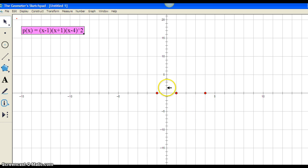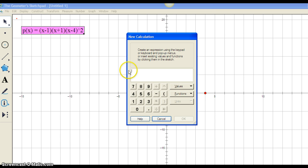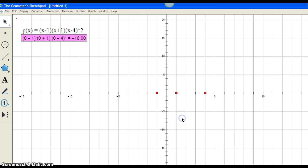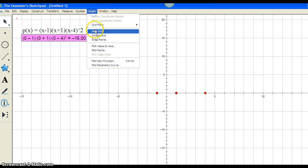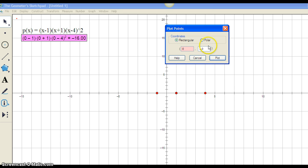First thing I'm going to do is find out where the y-intercept is. So in order to do that, I'm going to substitute the value of x equals 0 into our function. So let's go to number and calculate 0 subtract 1 times 0 plus 1 times 0 subtract 4 quantity squared. I can see that my answer equals negative 16 is already there. So I can go ahead and plot that point, 0, negative 16.